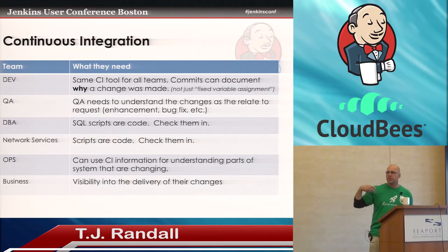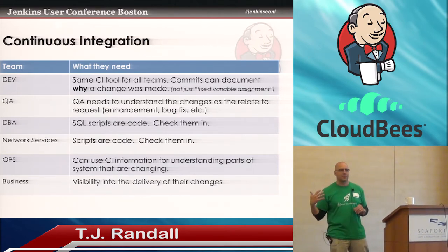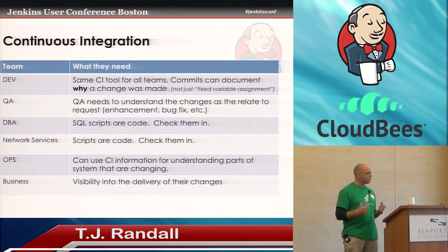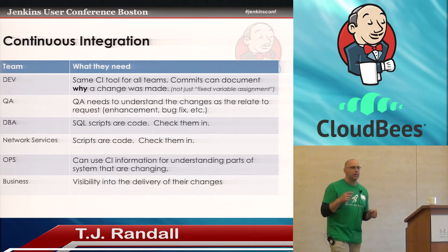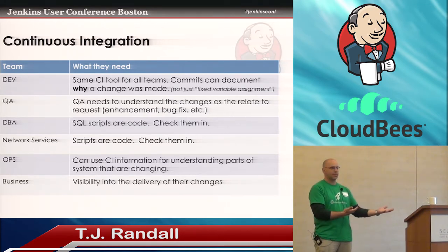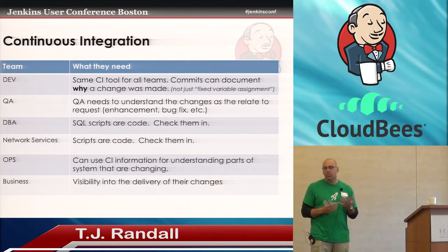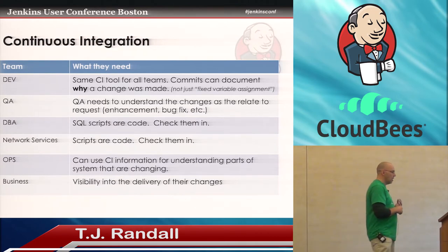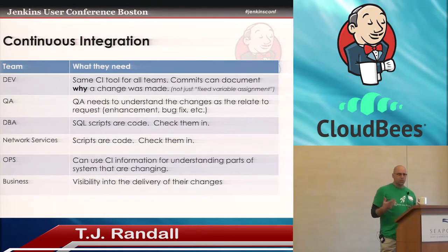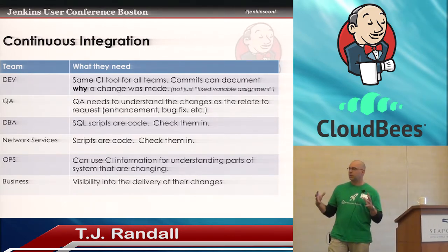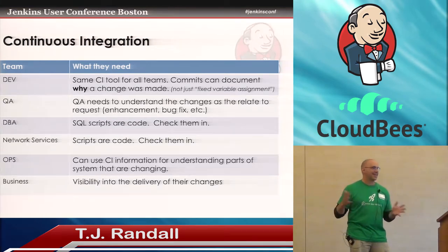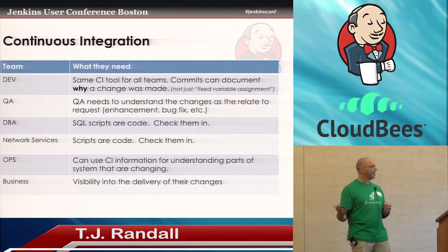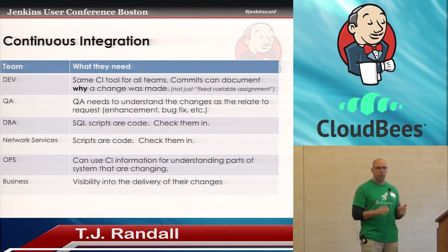From a continuous integration side, operations aren't really consuming a lot of this information, but it's important for them to understand what's changing. I talked to three people downstairs who have an upcoming release Friday night and they've been trying to tell their operations team what's changing and what to look out for—because operations has to keep everything up and running. Your CI tool can actually start to answer those questions. And for the business, just the visibility into the delivery of change. If you told them what was going on in a more consumable way, maybe that helps them build confidence in the dev team to say, okay, you guys are going to deliver, I know you're working, I know it's coming.